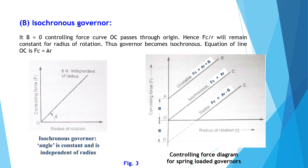For the synchronous governor, shown in figure 3b by curve OC: if b equals zero, the controlling force line passes through the origin, hence Fc/r remains constant for all radii of rotation and the governor becomes synchronous. The equation is Fc = ar. For the synchronous governor, the angle is constant and independent of the radius of the governor.